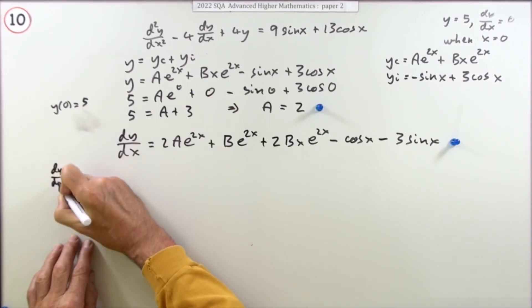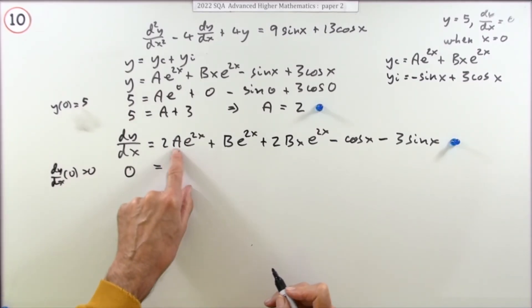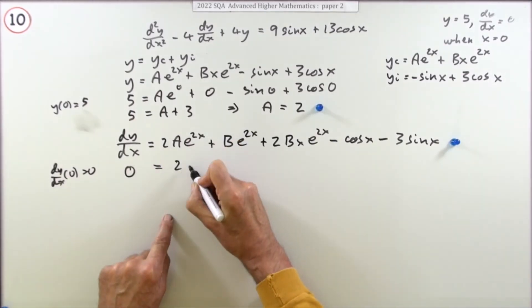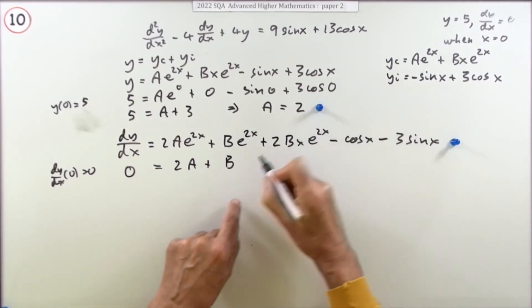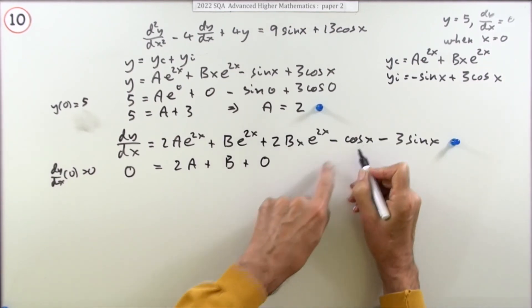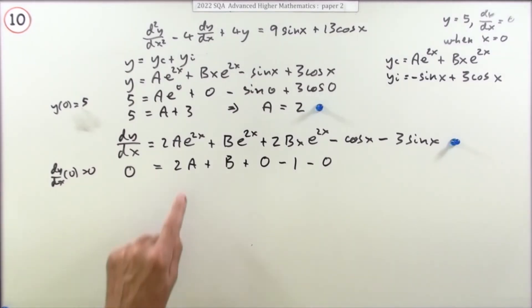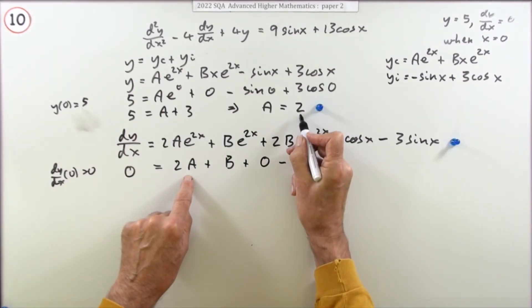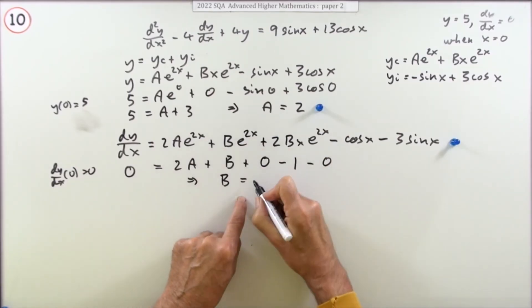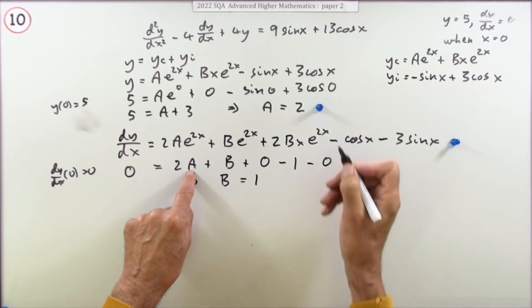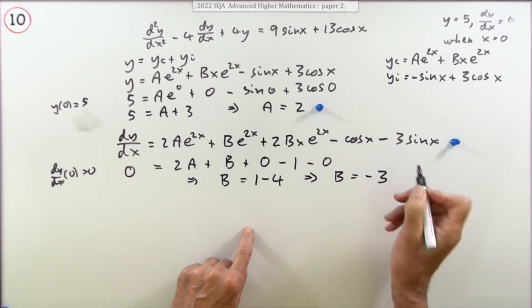Setting x = 0 and dy/dx = 0: 0 = 2A·e^0 + B·e^0 + 0 − cos(0) − 3sin(0) = 2A + B − 1. Since A = 2, this gives 0 = 4 + B − 1, so B = −3.